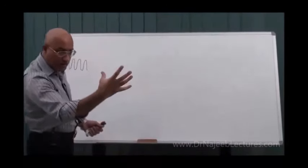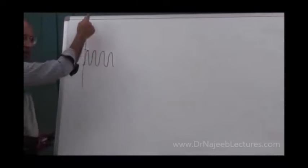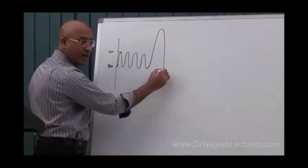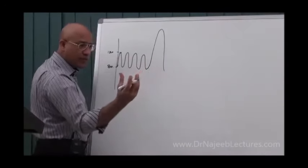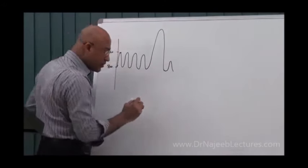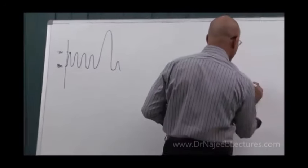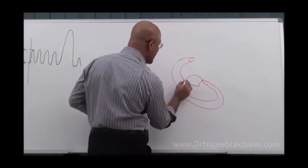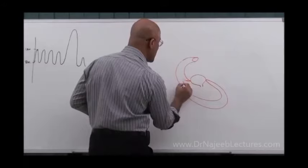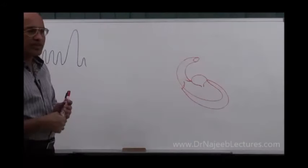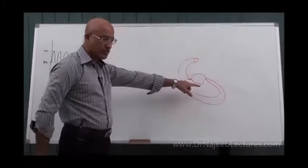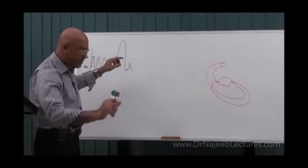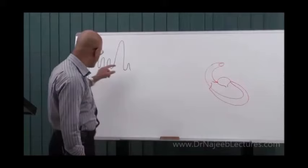If the left ventricle is producing more cardiac output, systolic blood pressure will go up. For example, if my left heart contracts more strongly, systolic blood pressure may go up. Or if my left heart contracts very weakly, then systolic blood pressure will be less than normal. So the systolic blood pressure depends on the performance of the left ventricle. If there are changes in left ventricular output, there will be changes in systolic blood pressure.